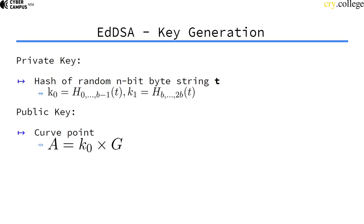So the first difference comes in the private key. Now the private key is generated again by taking an n-bit byte string, a random string T, but then this T is hashed and actually split into two values. The first half of the bits are stored in K0, and the second half are stored in K1.